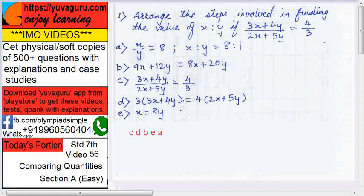So solve this bracket, b is the third step. Then e is what? Take all x on one side, all y on other side. So x this side, so it becomes 9 minus 8, that is 1x, and 12 on this side you get 20 minus 12 equals to 8y.